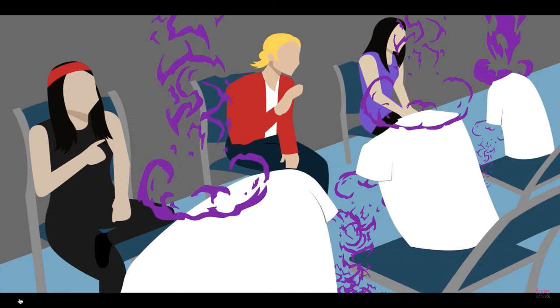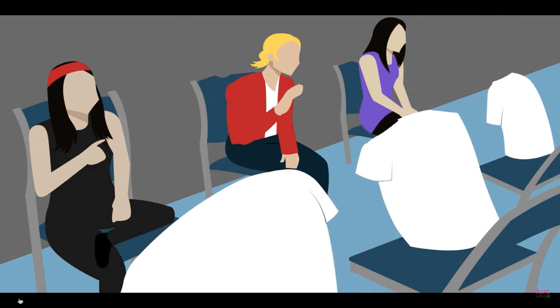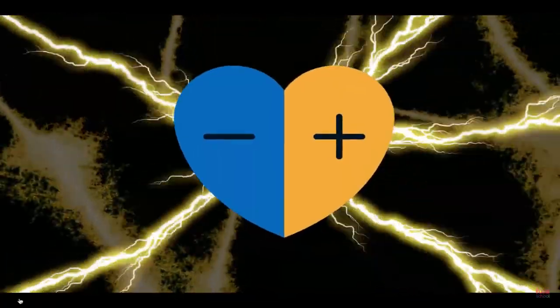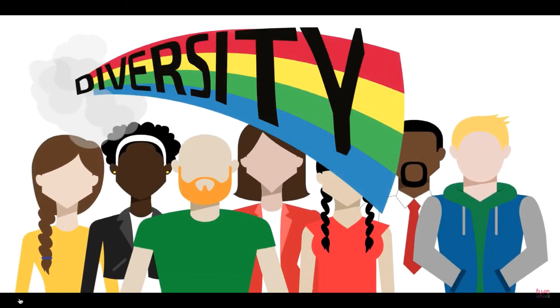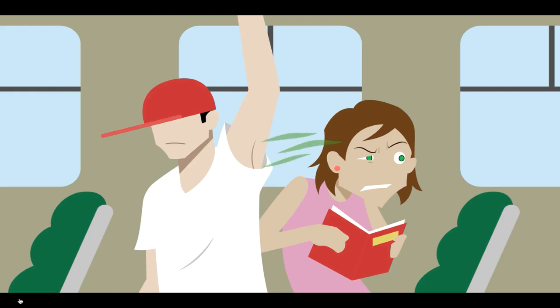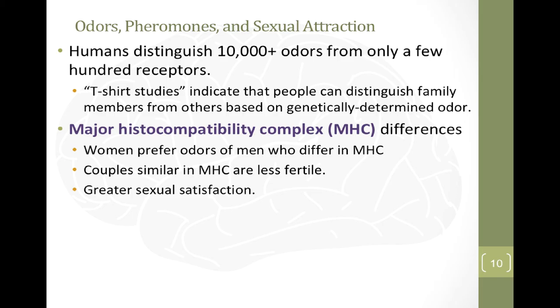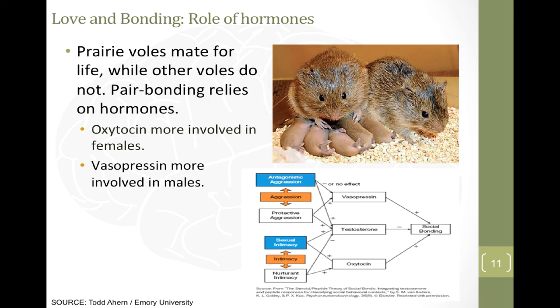Women were asked to score each box for intensity, pleasantness, and sexiness — almost like speed dating for t-shirts. The results were impressive: women preferred the scent of t-shirts worn by men with MHC genes different from their own. This brings new meaning to the term 'opposites attract' — we are more attracted to people who are genetically different from ourselves, which increases genetic diversity and a population's chance of survival. Studies have also shown that couples similar in MHC tend to be less fertile, while couples with greater MHC differences tend to have greater sexual satisfaction.